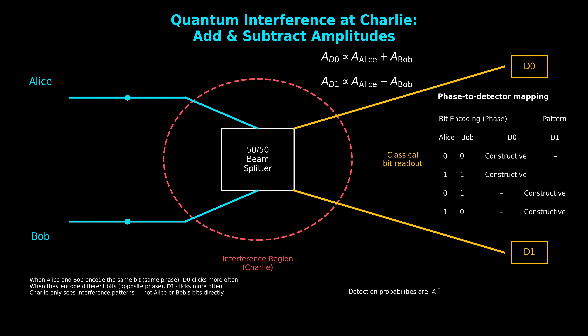Whether the interference is constructive or destructive depends entirely on the relative phase between their photons. After the beam splitter, the outputs are routed to two detectors: D0 on the top and D1 on the bottom. The gold lines represent the classical detection channels. Once a detector clicks, that signal is a classical bit and can be safely announced publicly. This emphasizes a key insight: Charlie's detectors produce purely classical information. There's no quantum state left at this point — just click patterns.